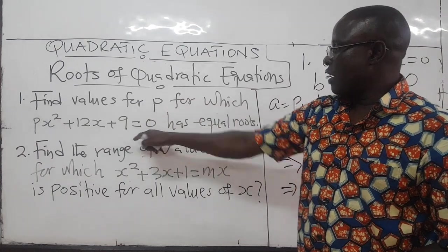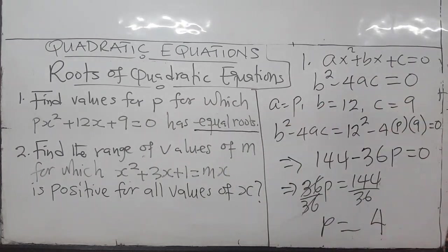Which means the value of P for which this quadratic equation has equal roots is 4, the number 4. Good.